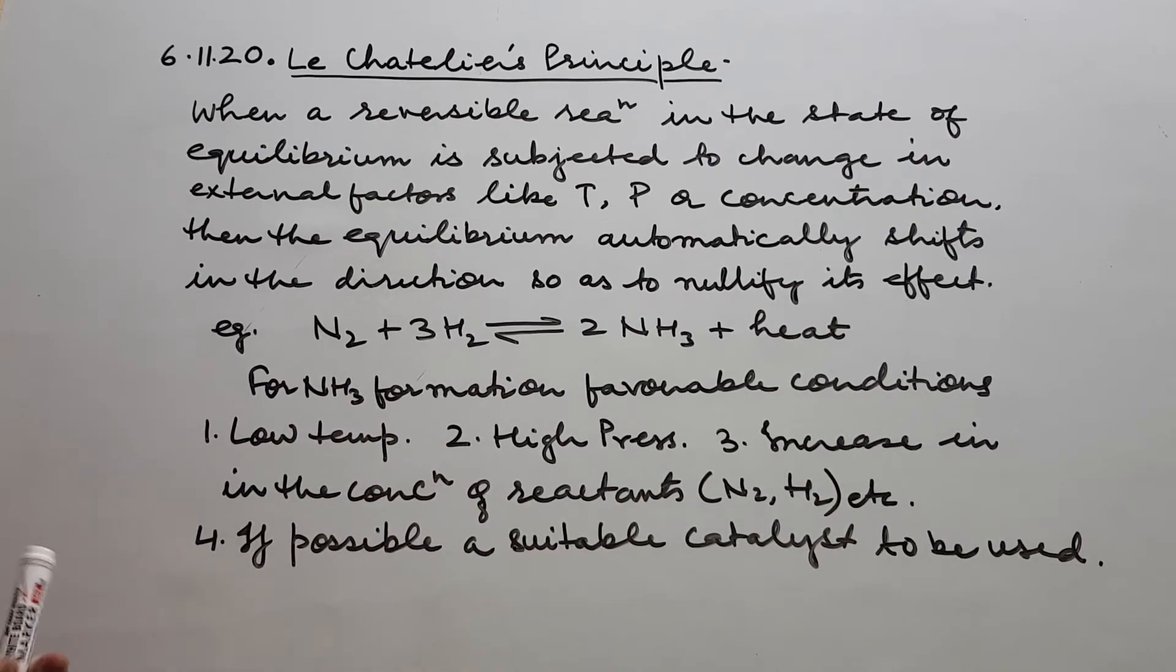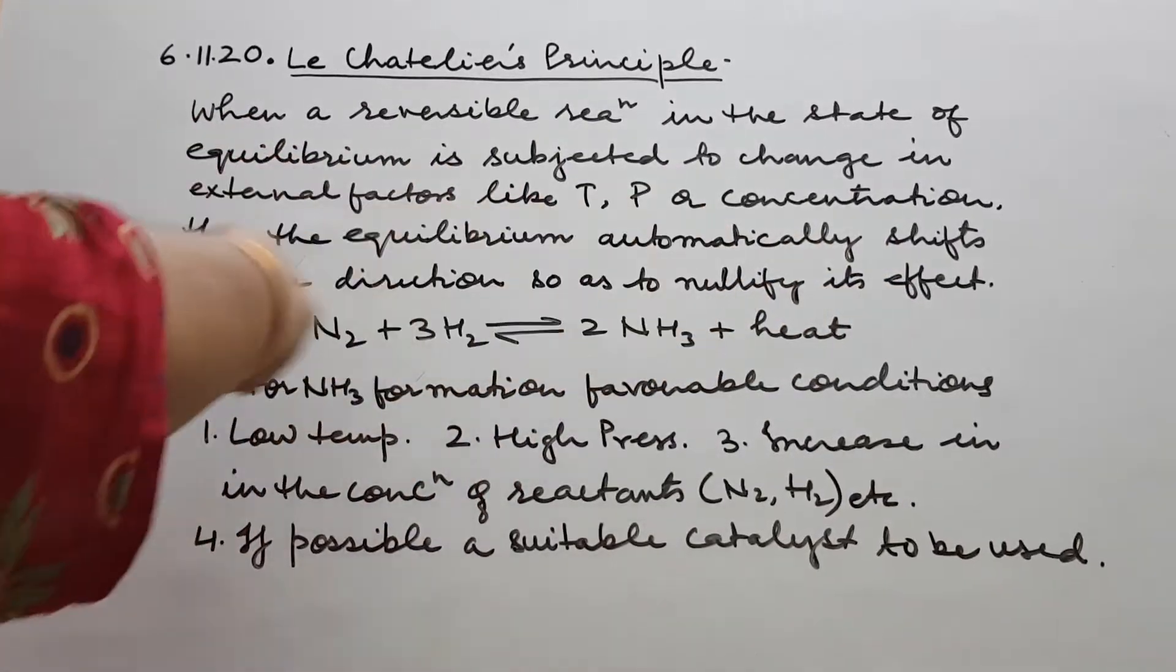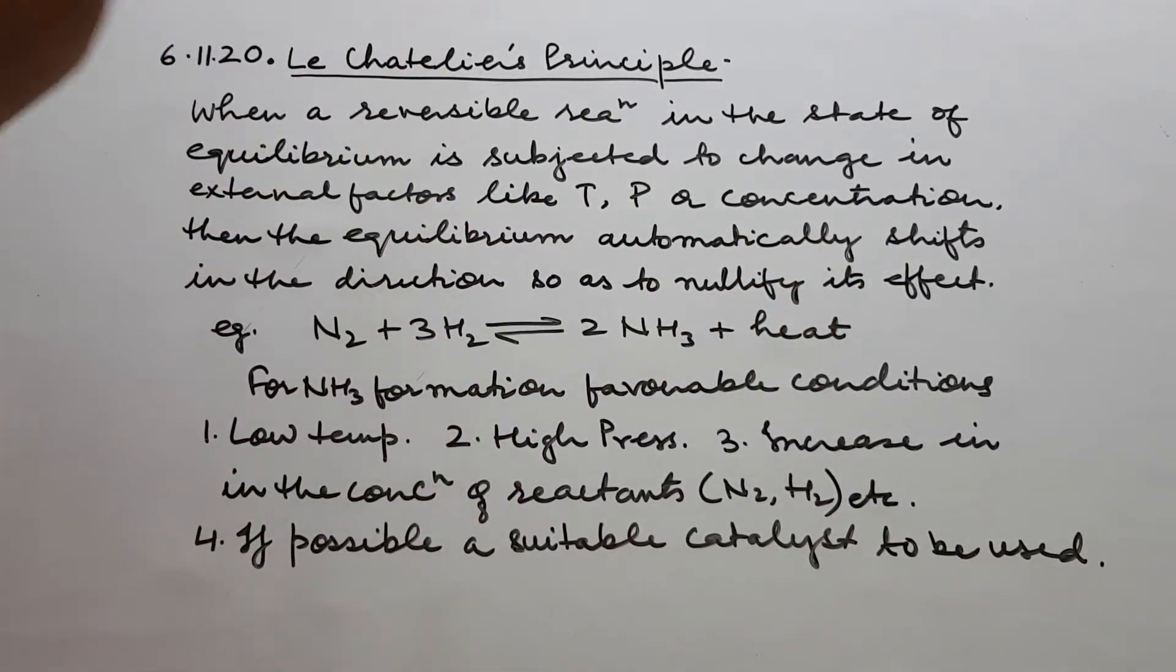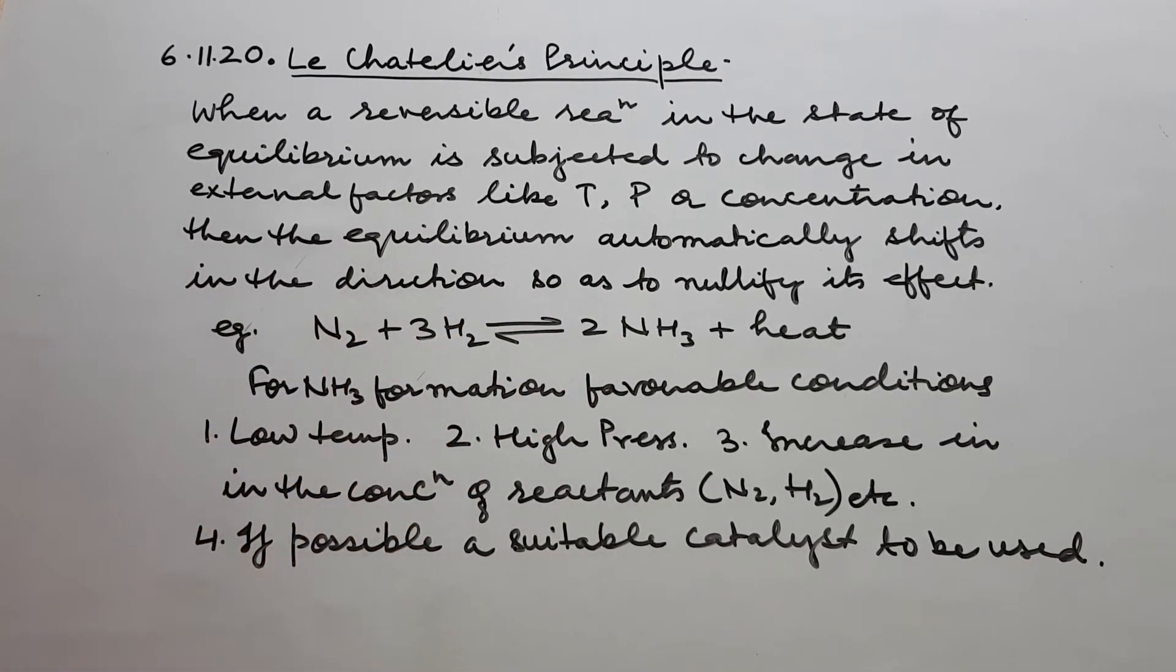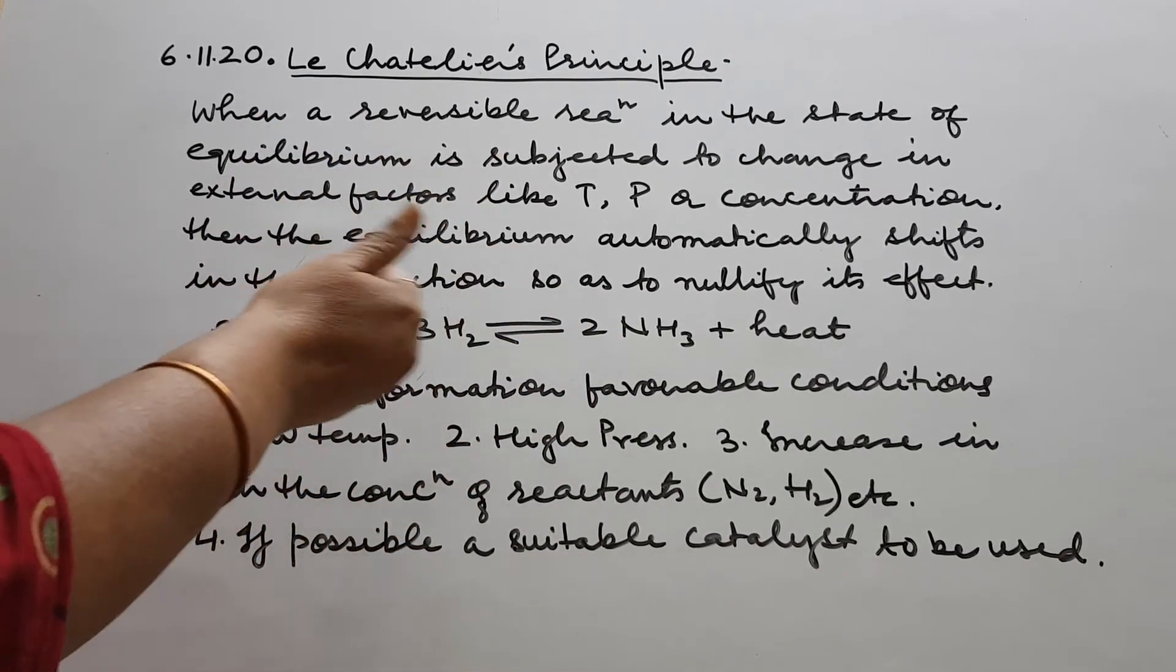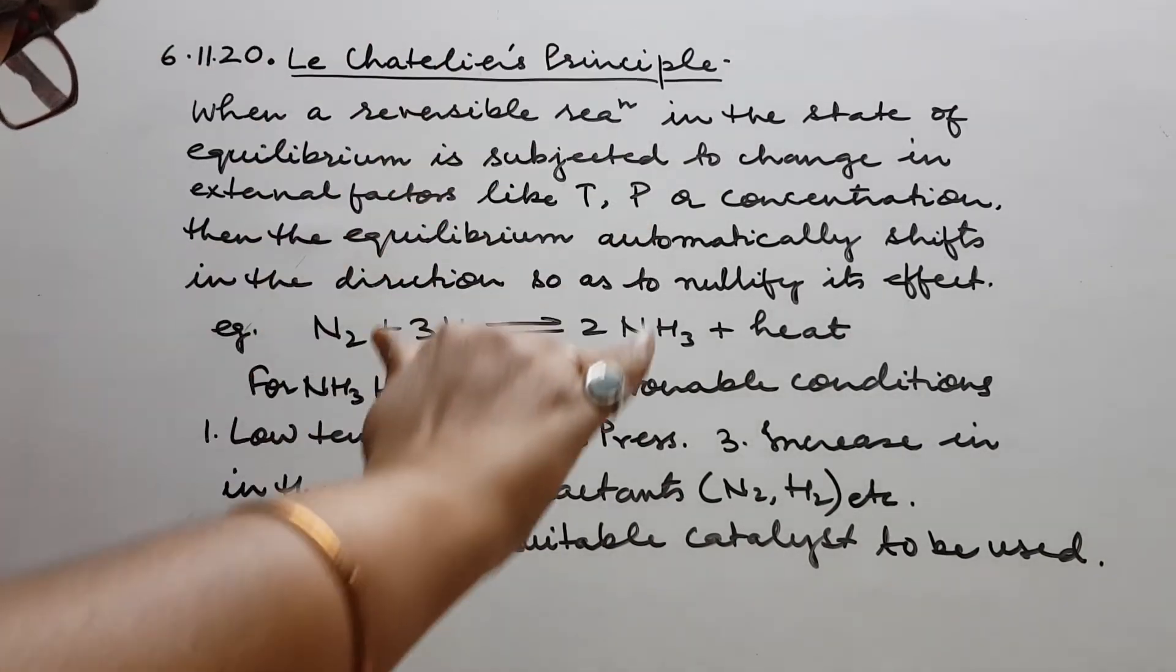Suppose they ask you now, what will be the suitable condition for the decomposition of ammonia? Then what happens? I can see this is absorbing heat for the backward reaction. So high temperature. Then second, it is proceeding with the increase in number of moles. Now it is this. These are the products. So naturally, low pressure.